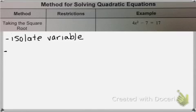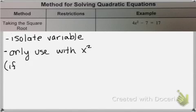You can only use this if your equation has an x squared. Meaning, if there's also an x, like x squared plus something x, you cannot use. So this only works if you only have x squared. If you have an additional x, you can't use this method.